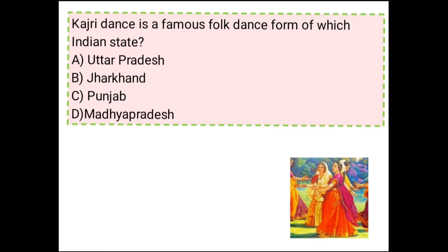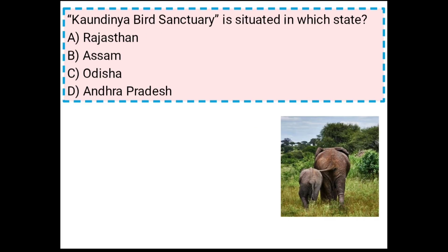Next question: Kaundinya Bird Sanctuary is situated in which state? The correct answer is Andhra Pradesh. Kaundinya Bird Sanctuary can be found in Andhra Pradesh.